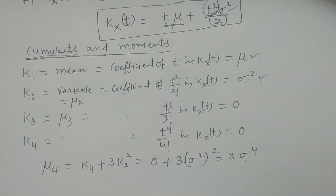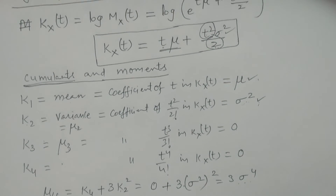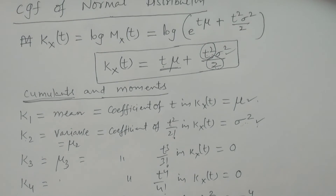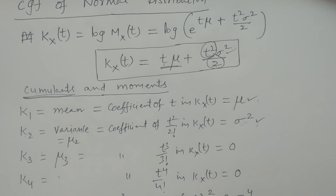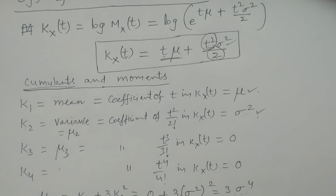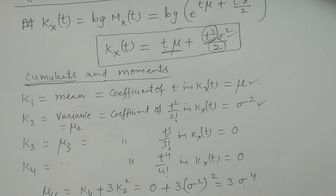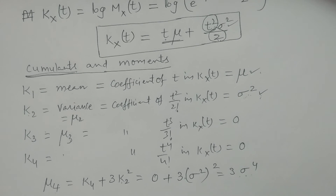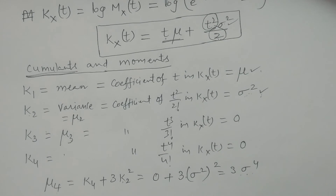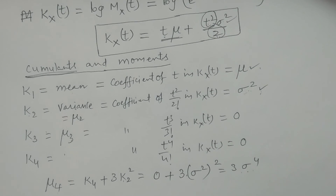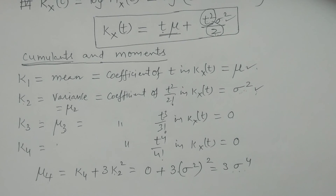This is the procedure for calculation of the cumulant generating function, cumulants, and also moments — central moments about the mean — through the cumulant generating function of the normal distribution. Hope you understand. Thank you.